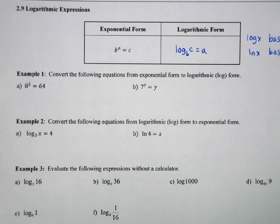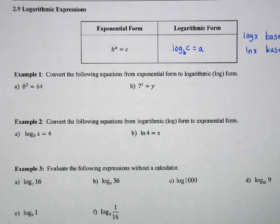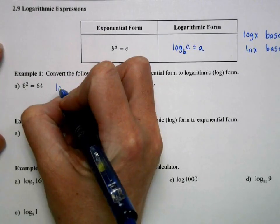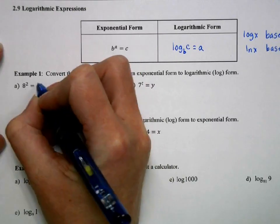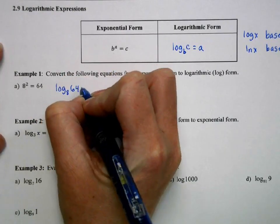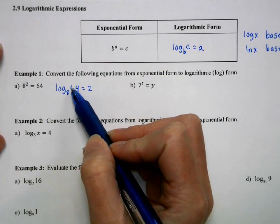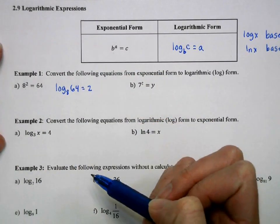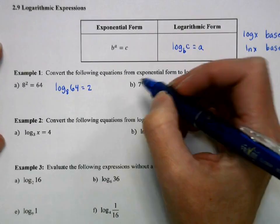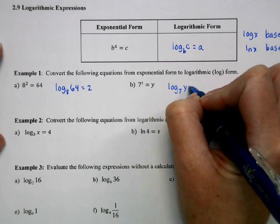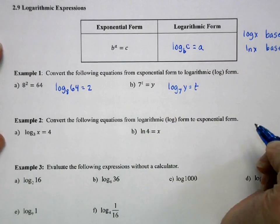So we're going to convert first from exponential form to logarithmic form. Whatever the base of the exponent is becomes the base of my logarithm. This part goes on this side, and then we get this. So this is essentially saying 8 to what power is 64, and we get 2. We'll do some of those later. Log base 7 of y equals t.